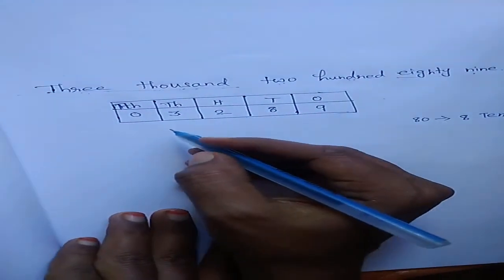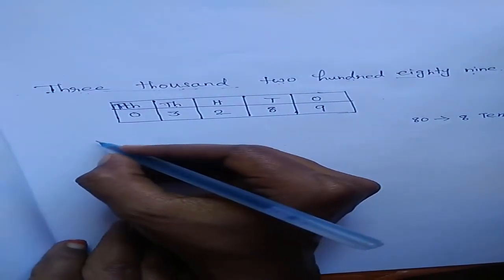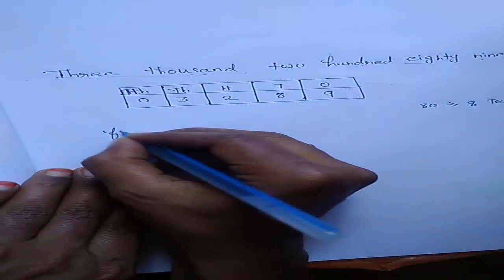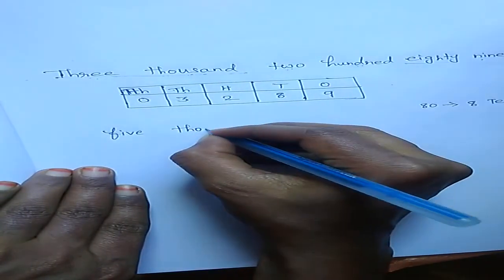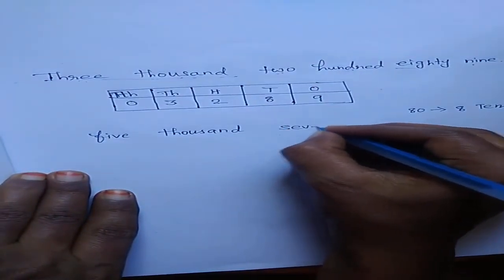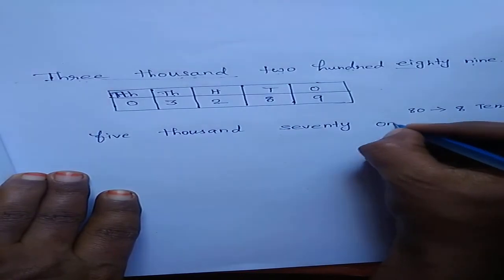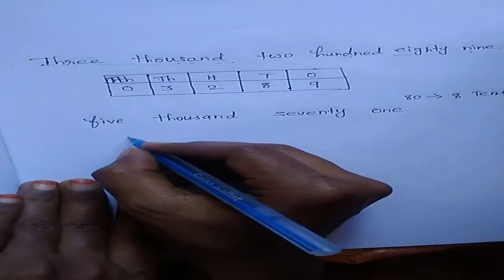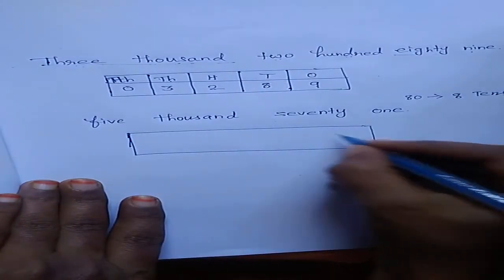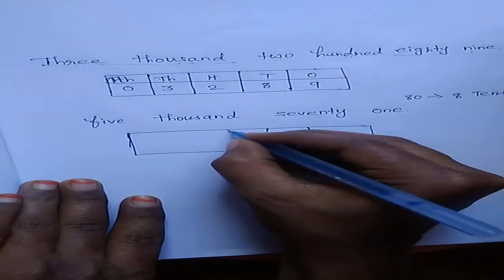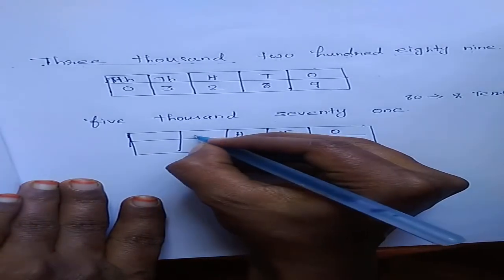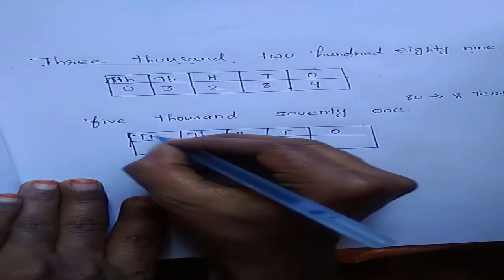Did you understand, children? I will give one more example. Five thousand seventy-one. Draw the place value box: ones, tens, hundreds, thousands, ten-thousands.